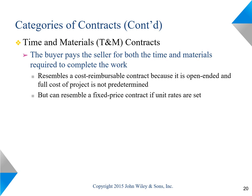Time and material contracts reimburse the seller for all the costs of labor, time, and materials used on the project, making them similar to reimbursable contracts. However, in many time and materials contracts, the unit labor or unit material costs are fixed, which also makes them similar to fixed price contracts.